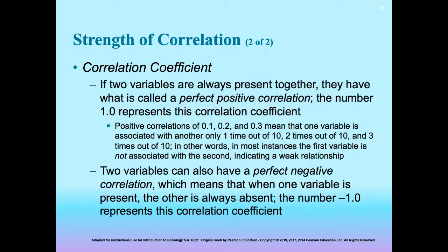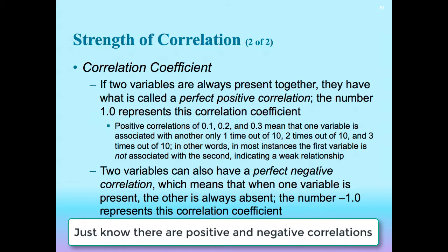But social life is much more complicated than physical conditions, and there are no 1.0s in human behavior. Two variables can also have a perfect negative correlation, meaning that when one variable is present, the other is always absent. The number negative 1.0 represents this correlation coefficient. Just know that there are differences between positive and negative correlations for now.